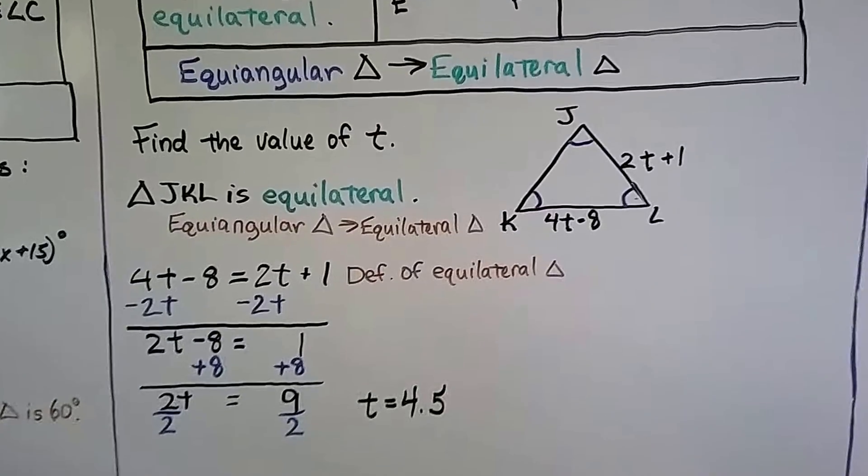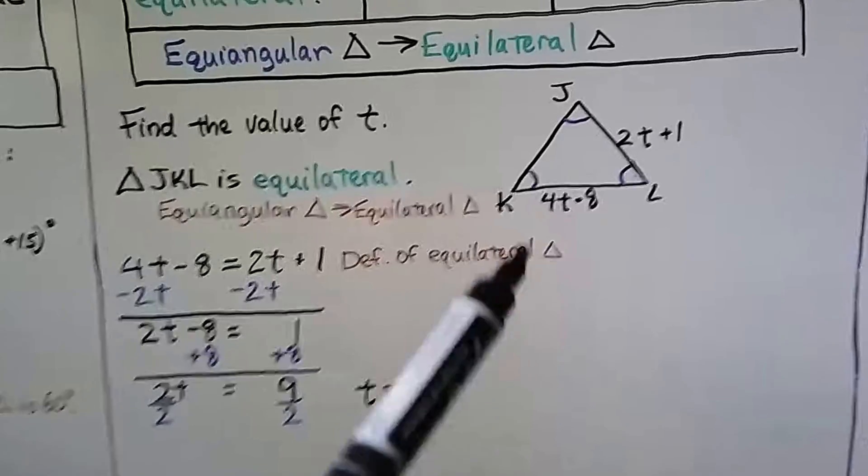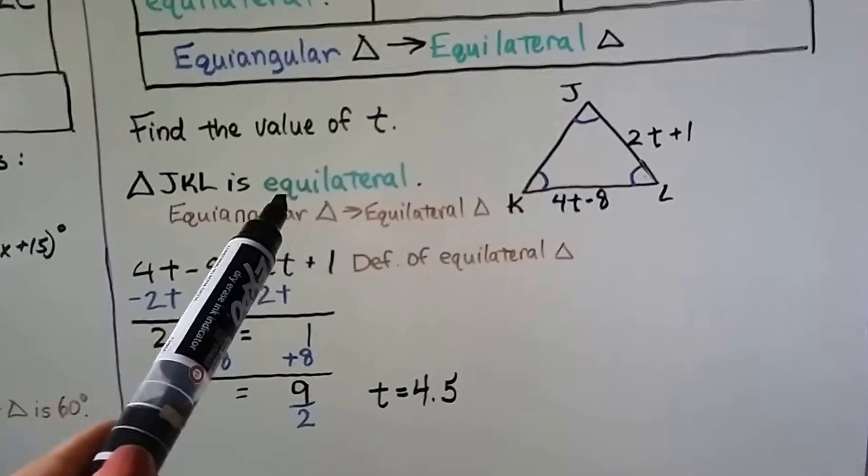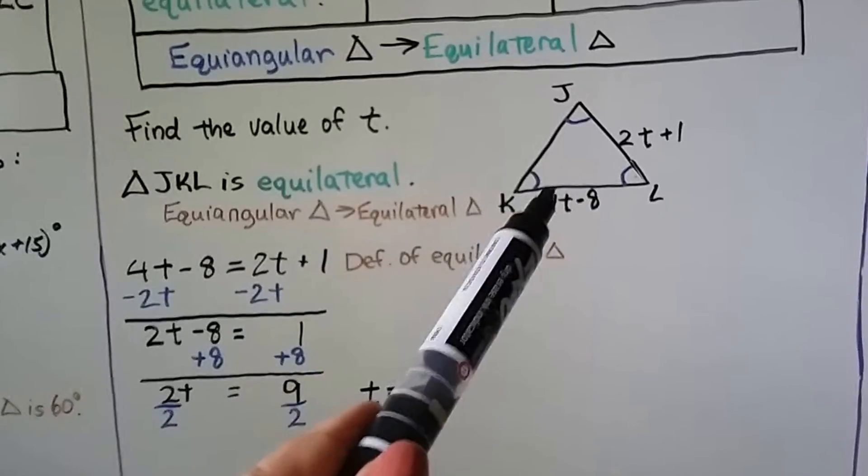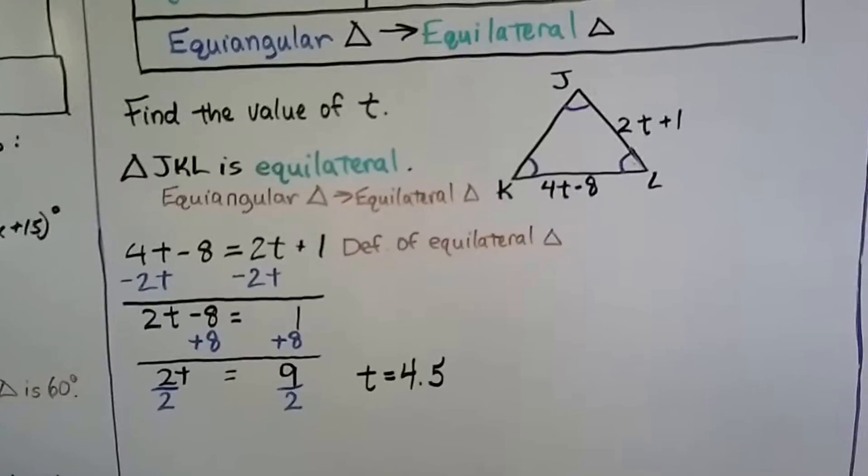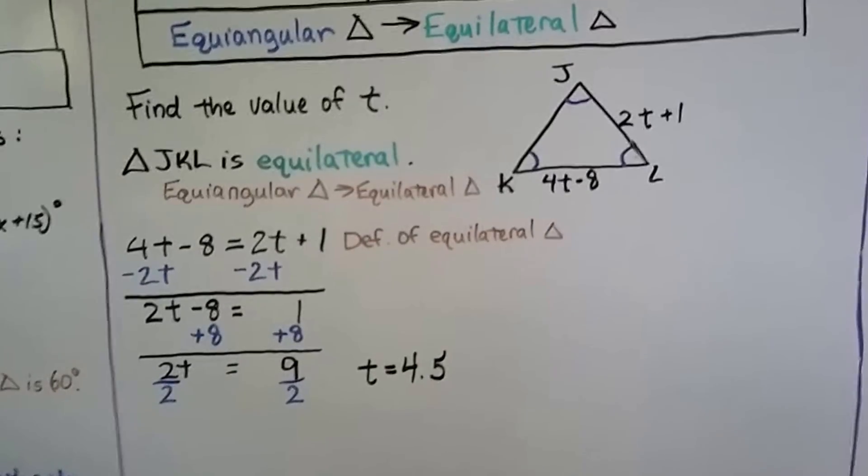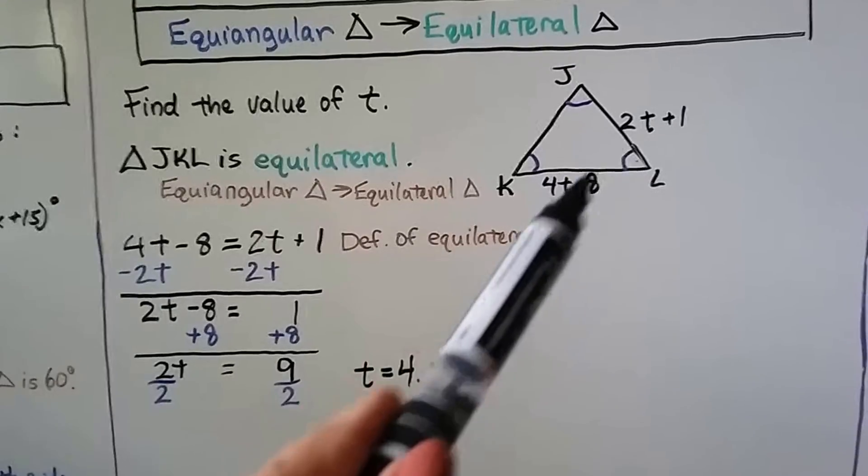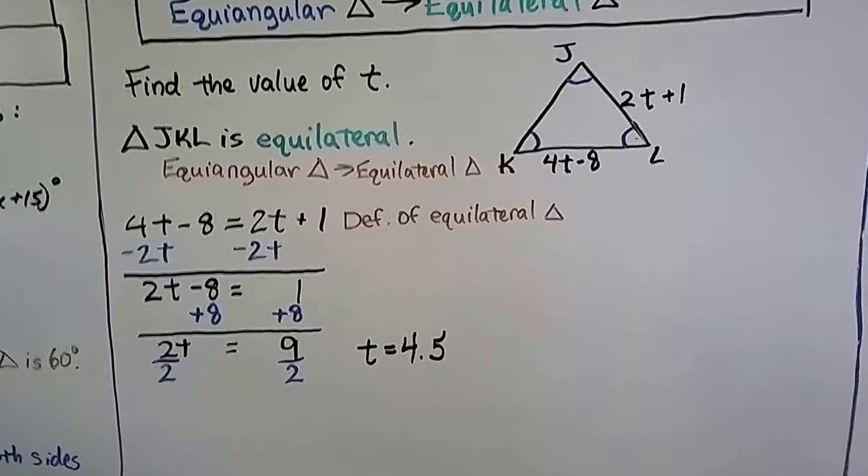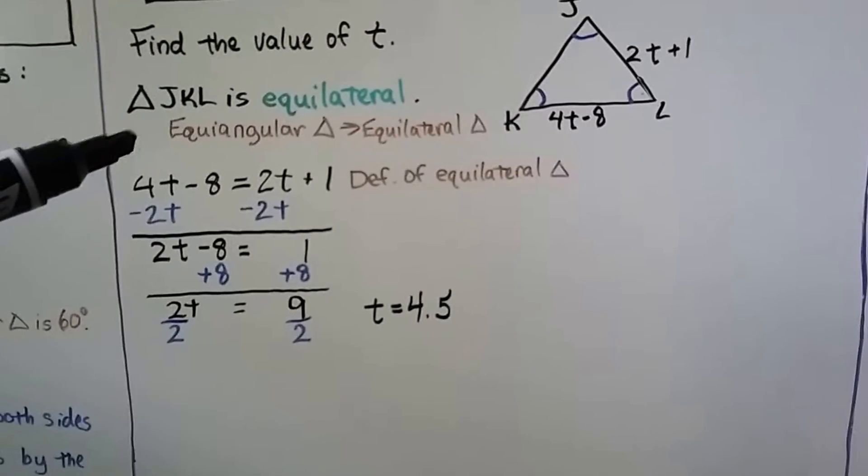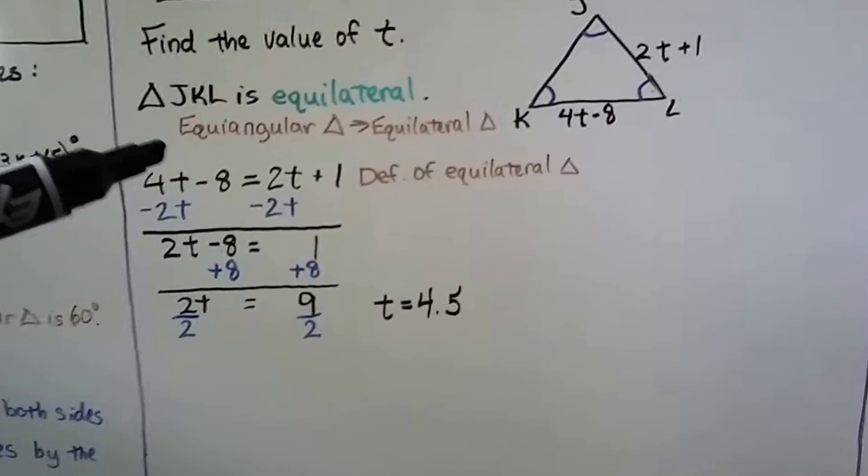We can find the value of t in this triangle. We can see it's equiangular and it is equilateral because it's equiangular. This side JL is 2t plus 1. This side KL is 4t minus 8. Well, if it's equilateral, then that means all the sides are equal. That means 2t plus 1 is equal to 4t minus 8, and that's our equation. We can say 4t minus 8 equals 2t plus 1. It's the definition of an equilateral triangle.